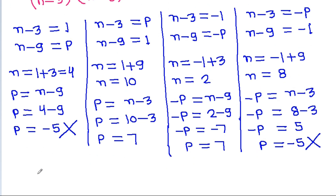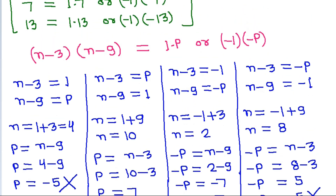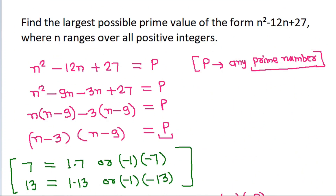So we get p equals 7. The largest possible prime value is 7.